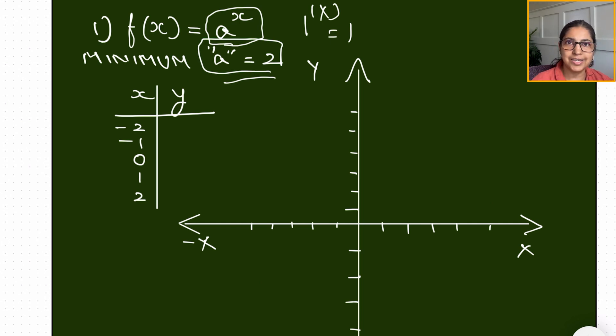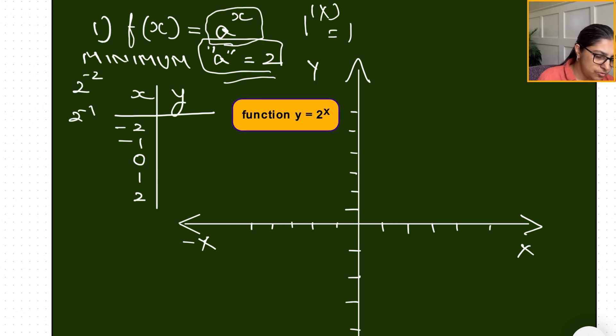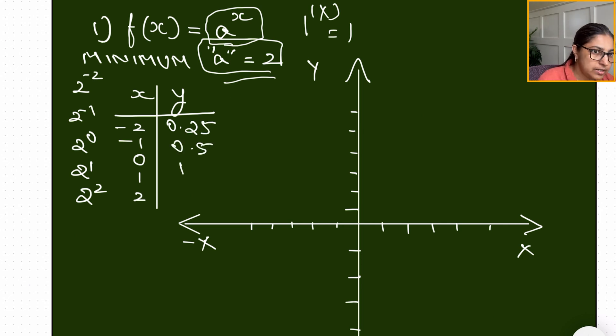So what we're looking for is a function of x for y equal to two power x. When you solve that, you take the base a when x is minus two, two power minus one, two power zero, two power one, two power two, and the values which I have already calculated turn out to be 0.25, 0.5, 1, 2, and 4.